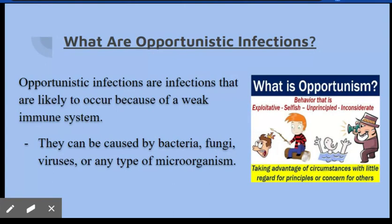Opportunistic infections are infections that are likely to occur because of a weak immune system. They can be caused by bacteria, fungi, viruses, or any type of microorganism that enters the body and causes an infection.